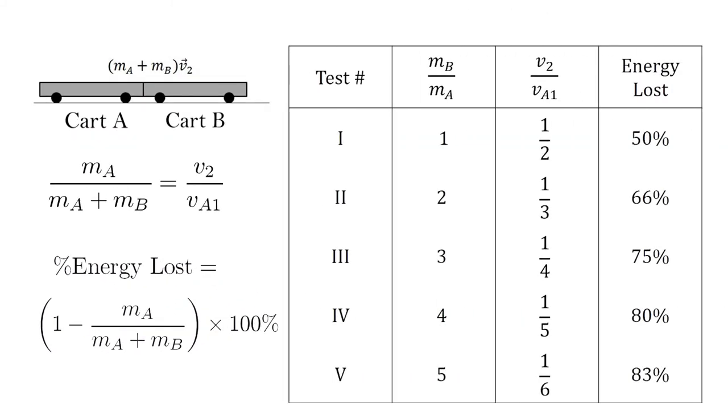We break this experiment down into five cases with varying mass of B, ranging from equal to the mass of cart A to five times the mass of cart A. We will predict the velocity of the system post-collision and compare it with the velocity prior to impact. We will also calculate the percent energy loss for each case.